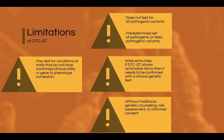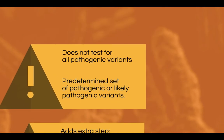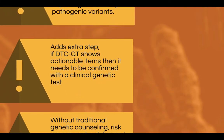Here are some of the limitations of direct-to-consumer genetic testing. DTCGT does not test for all pathogenic or disease-causing variants for a particular condition. The test assesses a predetermined set of pathogenic or likely pathogenic variants, not the full range of genetic variation. This is done through SNP arrays. Therefore, the result cannot be used to rule out a condition. Even if DTCGT shows an actionable result, it needs to be confirmed with a clinical genetic test, thus adding an additional step that comes with an additional cost in terms of time and money.